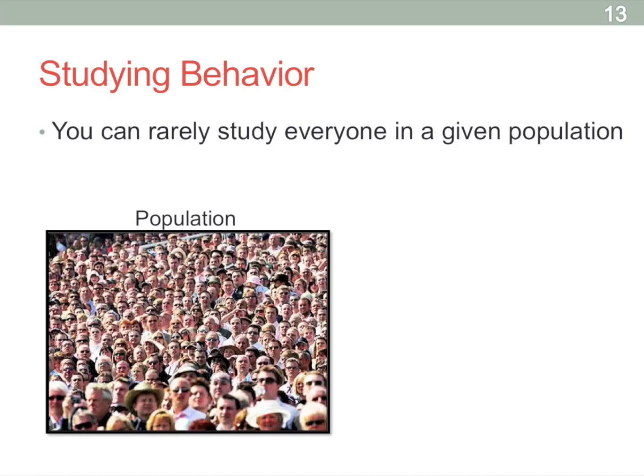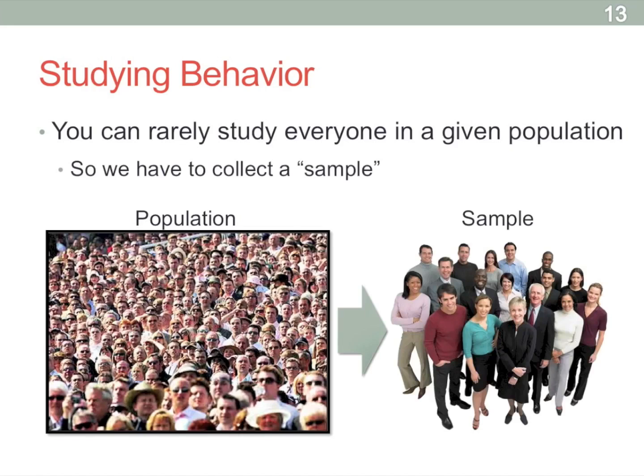And then, of course, you can't ever select everyone in that population. So you have to draw a, hopefully, representative sample, which is basically just a smaller collection of individuals that capture the diversity of the population itself that you're interested in.